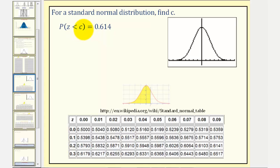We'll find C by using the cumulative Z-score table provided here below. But before we do this, notice how this probability is greater than 50%, so we should recognize that the Z-score would be positive.